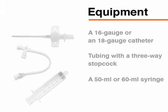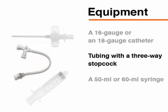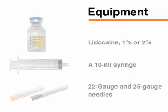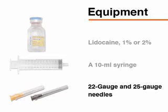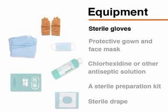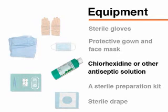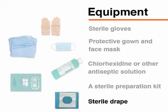The equipment needed for aspiration includes a 16-gauge or 18-gauge over-the-needle catheter, tubing with a three-way stopcock, and a 50 or 60 milliliter syringe. To administer local anesthesia, you will need one percent or two percent lidocaine, a 10 milliliter syringe, and 22-gauge and 25-gauge needles. You will also need sterile gloves, a protective or sterile gown, a face mask, chlorhexidine or another antiseptic solution, a sterile preparation kit, and a sterile drape.